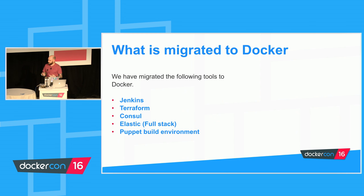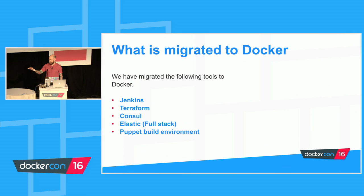The tools we've fully migrated into Docker are Jenkins, Terraform, Consul, Elastic, and our Puppet build environment. We plug Terraform into Jenkins — you check in your .tf file, it goes through unit tests, fires up a Terraform container, runs the build, checks AWS, and then tears down the container. This lets us do asynchronous builds with Terraform into our AWS environment, with multiple versions of Terraform running at the same time.